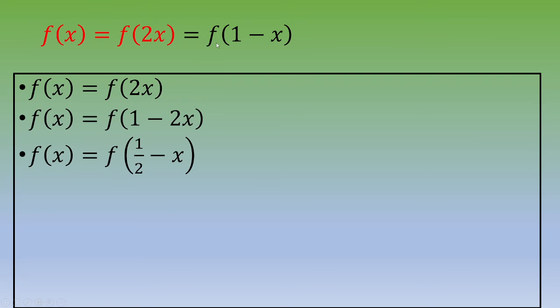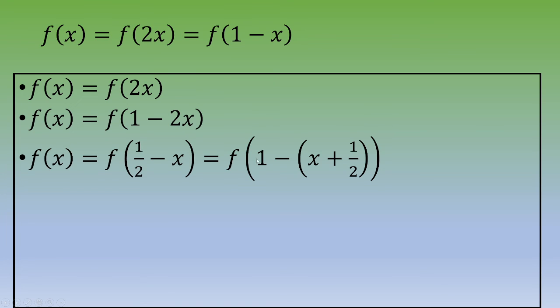We would like to end up with 1 minus something. So we transform the expression in parentheses: 1/2 - x = 1 - (x + 1/2).